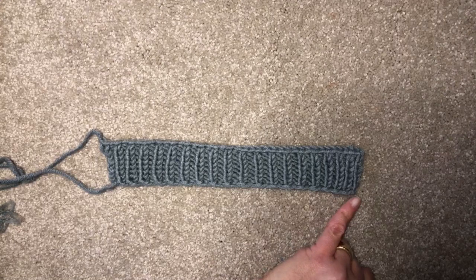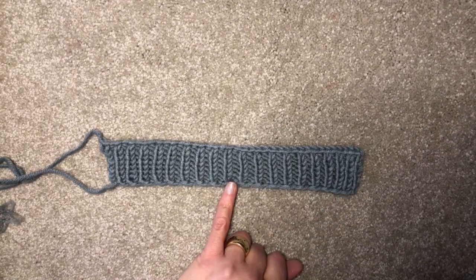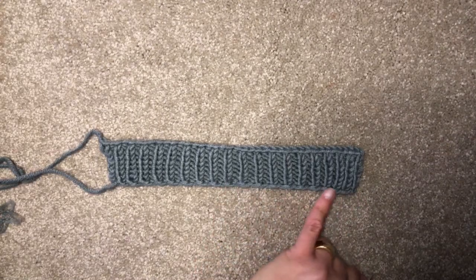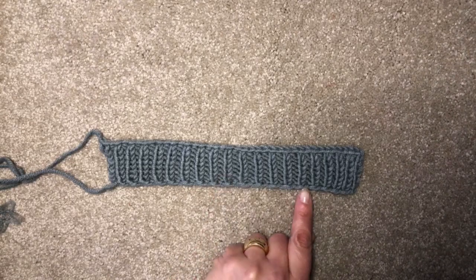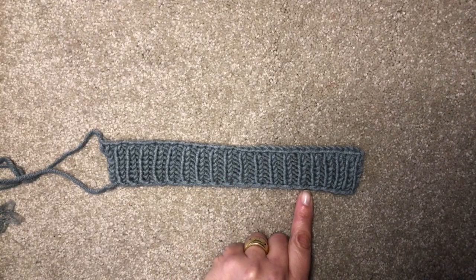If you create knit stitches, which is what you do with the long tail cast on, and work ribbing above that, what you get is an edge that is different on both sides.